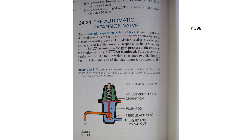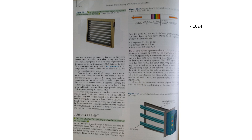On page 598 there is the automatic expansion valve. Look it up under 'A' for automatic in the index, and it takes you right there. The key fact: the automatic expansion valve maintains constant pressure in the evaporator. Superheat is not mentioned in that context — that's all you really need to know about the automatic expansion valve.